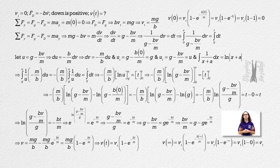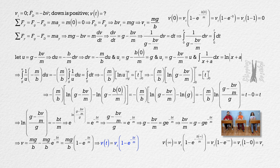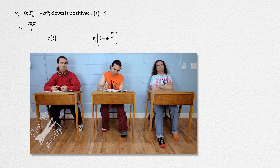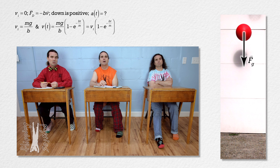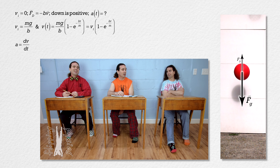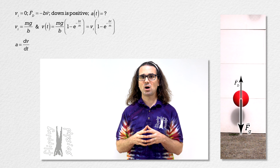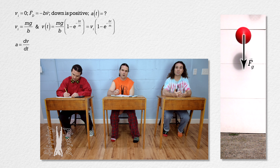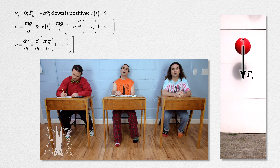Now that we have the equation for velocity as a function of time, we can also determine the equation for acceleration as a function of time. How do we get acceleration from velocity? Acceleration is the derivative of velocity with respect to time. The equation for velocity as a function of time equals terminal velocity times the quantity one minus e to the power of negative proportionality constant times time divided by mass. Actually, it will be a little bit easier if you back up one step and leave mass times acceleration due to gravity over proportionality constant in the equation.